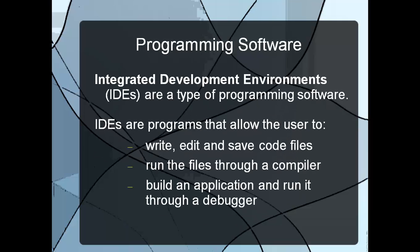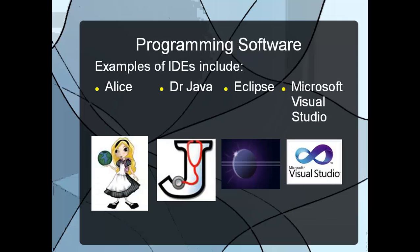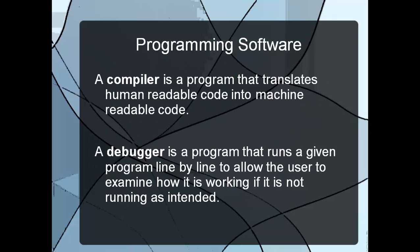You can also run your application through a debugger to test it and make sure it functions properly. Some examples of IDEs include Alice, which we've used; Dr. Java, which you'll use in grades 11 and 12; Eclipse, another Java IDE; and Microsoft Visual Studio, which supports things like Visual Basic. Programming software also includes smaller standalone programs such as a compiler — a specific program that translates human-readable code into machine-readable code — which can also be combined as part of an IDE.